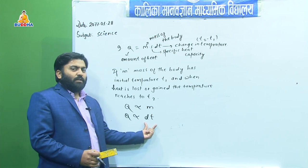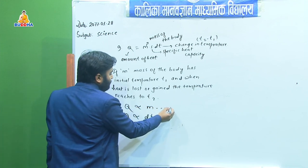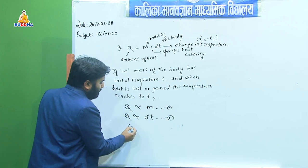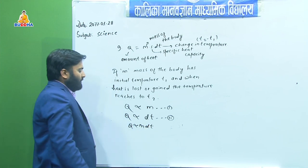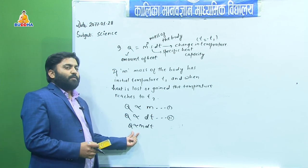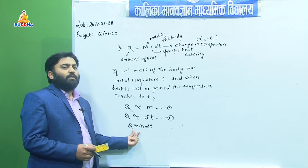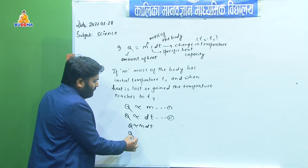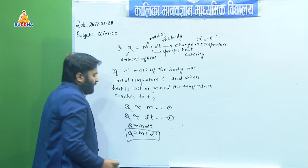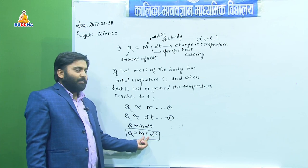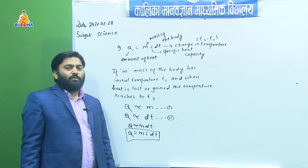By combining these two proportionalities, we write Q ∝ M·DT. To remove the proportionality symbol we introduce a constant S, giving Q = M·S·DT. This proves the equation, where S is the specific heat capacity of the substance, whose value differs for different substances.